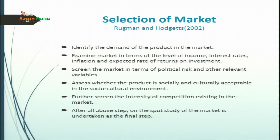As per Luthans and Hodgetts (2002), there are six essential steps for selecting a market. The first step is to identify the demand of the product in the market. When you are selecting a market, the first thing is to find the correct market on the basis of demand — assessing whether there is potential demand, and whether there is any latent need of the customer which you can fulfill with your product.